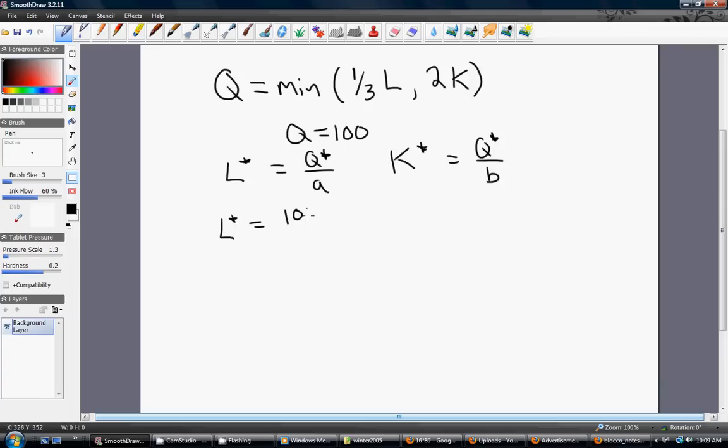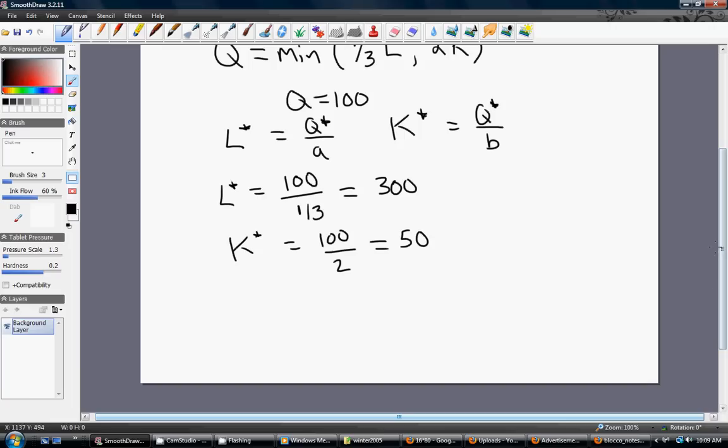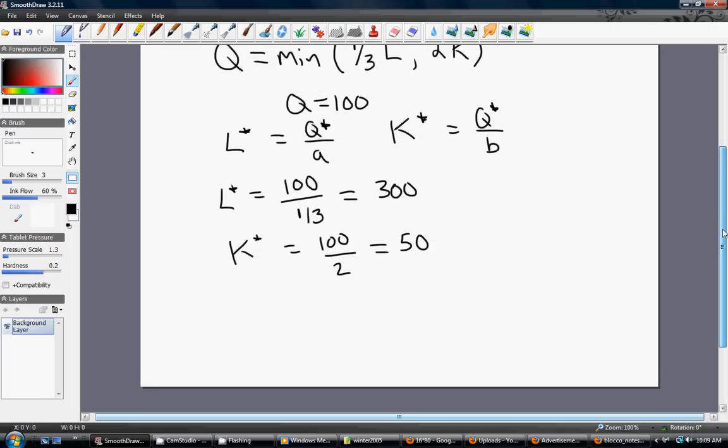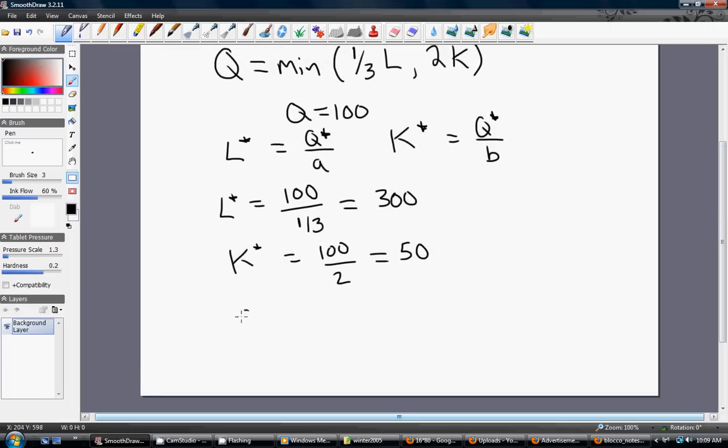So upon substitution, L star equals 100 over one-third equals 300, and K star equals 100 minus 50. So we want to use 300 units of labor and 50 units of capital. That would be your ideal input mix. We can verify that result by plugging these numbers back into the production function.